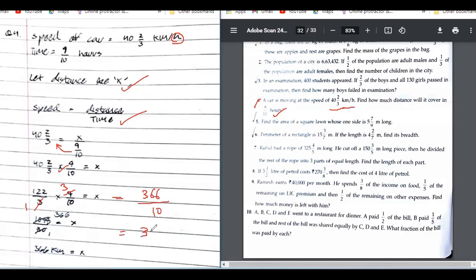This equals 36.6. Now we have the distance in kilometers. The final statement for the distance covered in 9 by 10 hours is 36.6 kilometers.